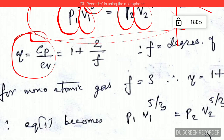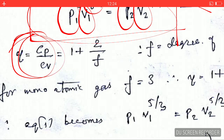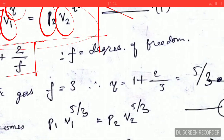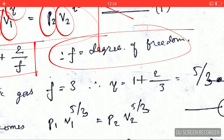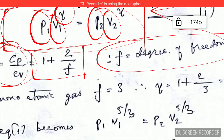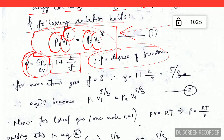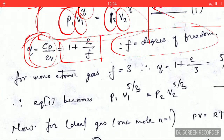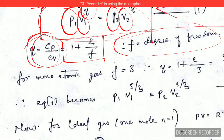The ratio γ equals Cp over Cv, which further equals 1 plus 2 over f, where f is the degree of freedom. In a previous lecture I have already explained degrees of freedom, so you can refer back to that.